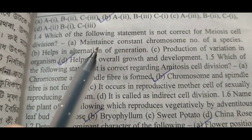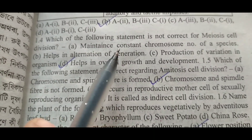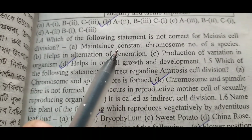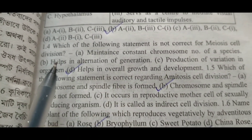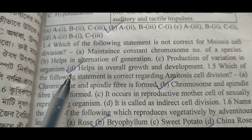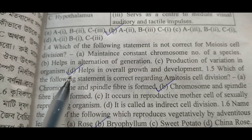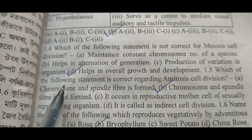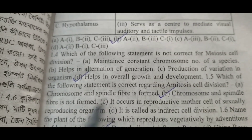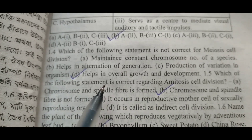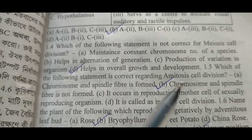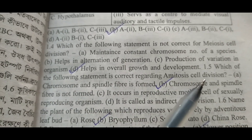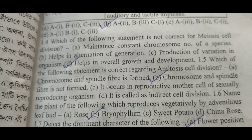Next, 1.4: Which of the following statement is not correct for meiosis cell division? Right answer is D. Next, 1.5: Which of the following statement is correct regarding amitosis cell division? Right answer B.